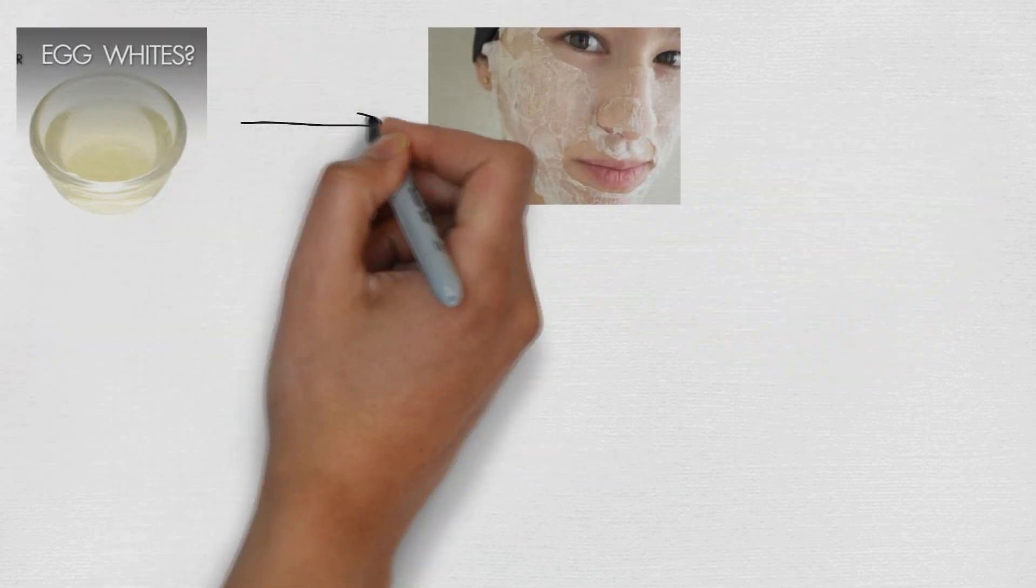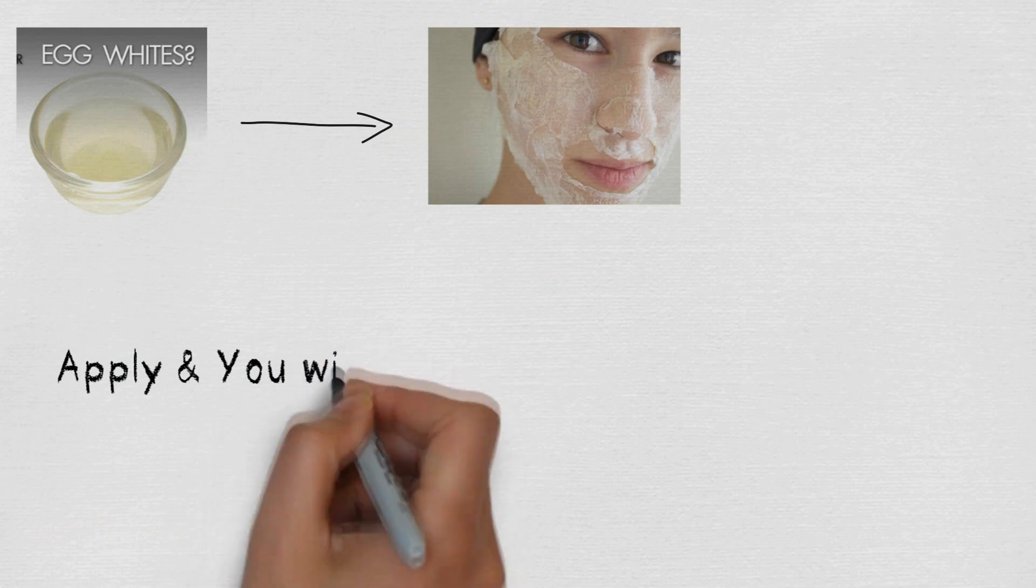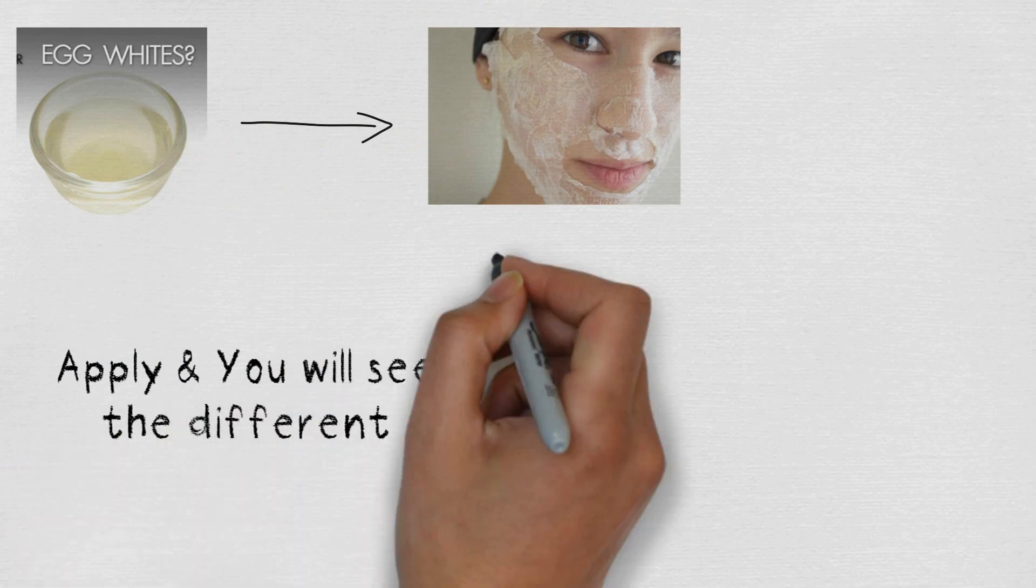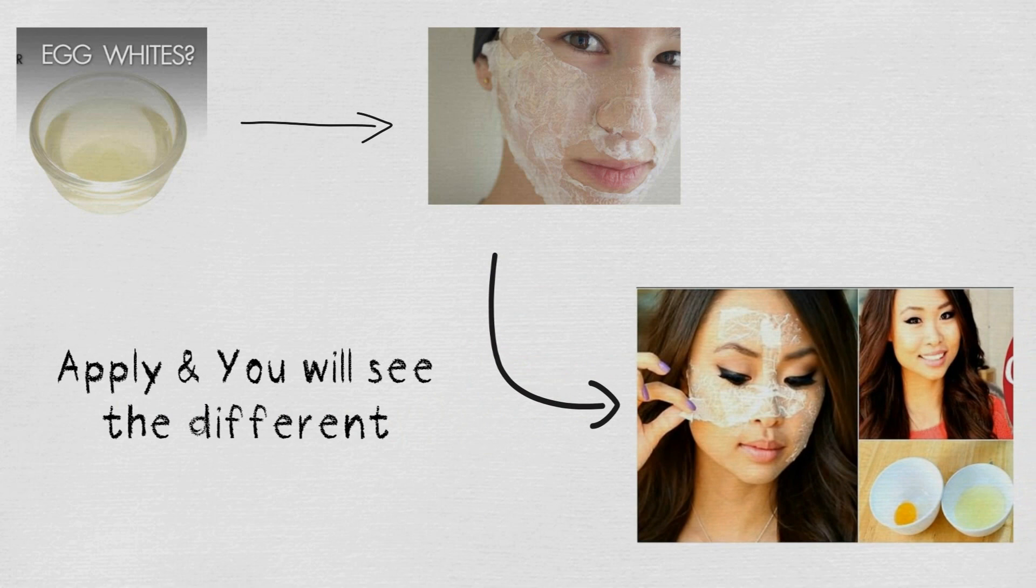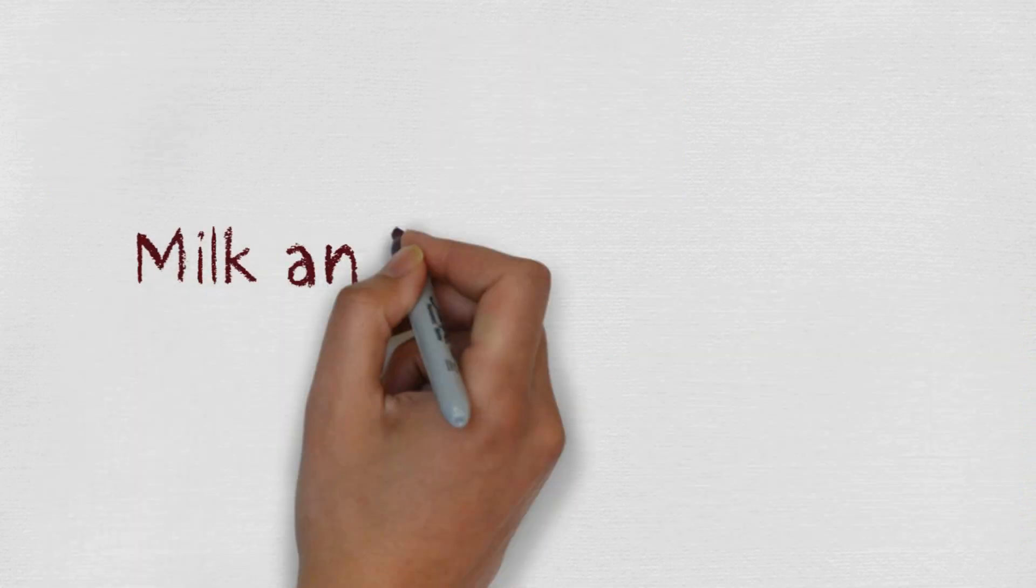Spread the egg white with your fingers or a brush and let it dry. Then peel off the mask and rinse with lukewarm water. You can repeat this process twice a week.